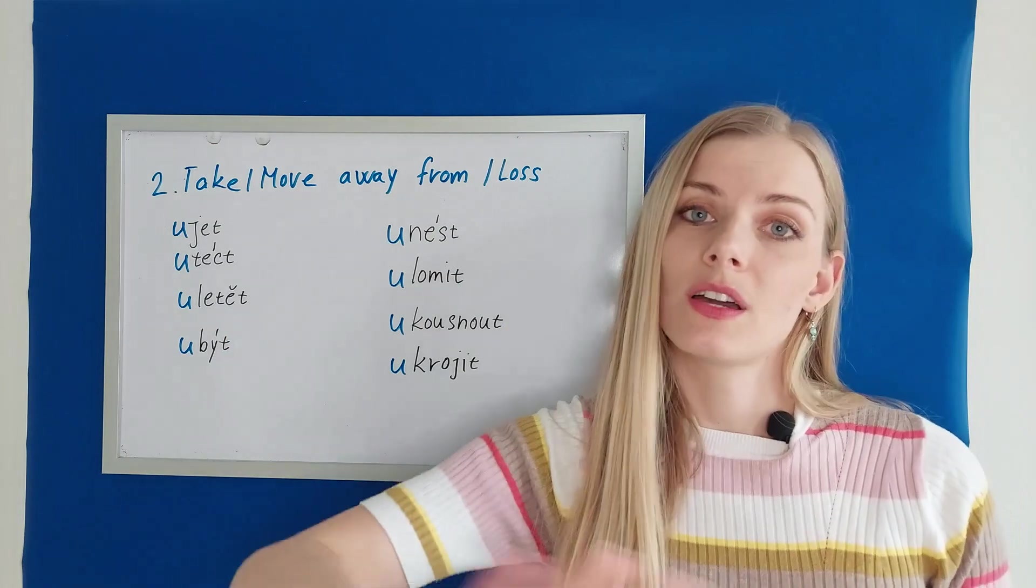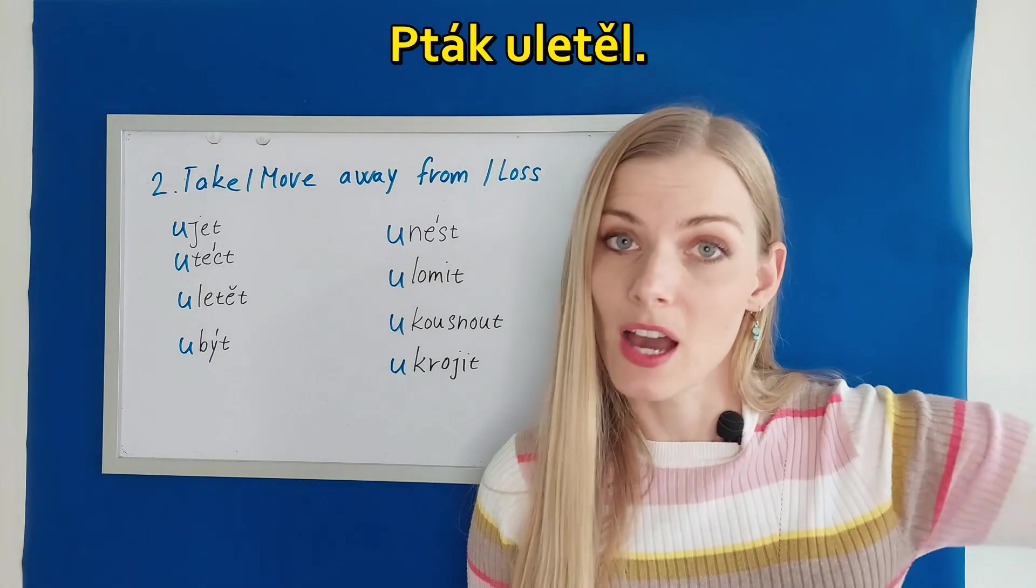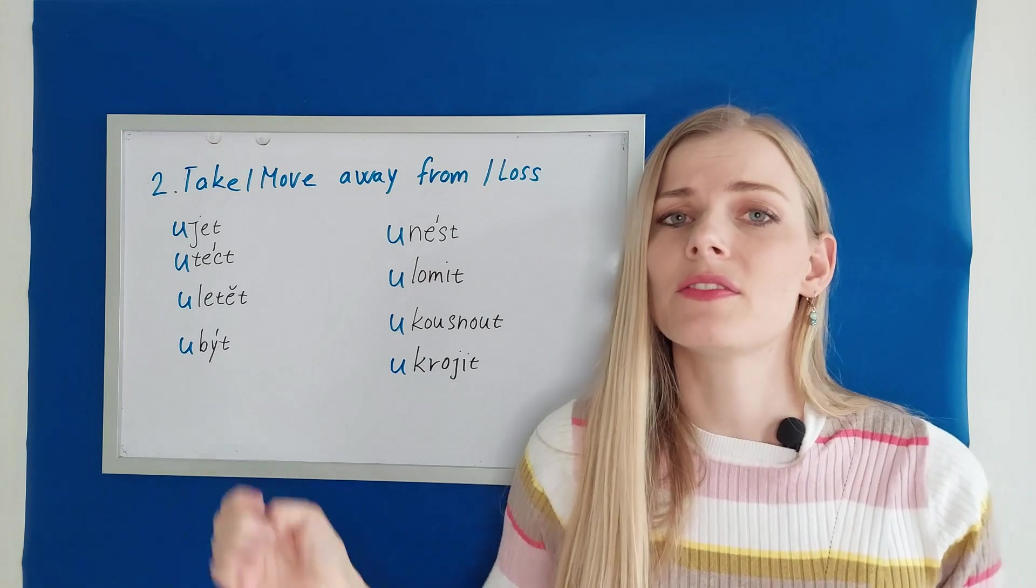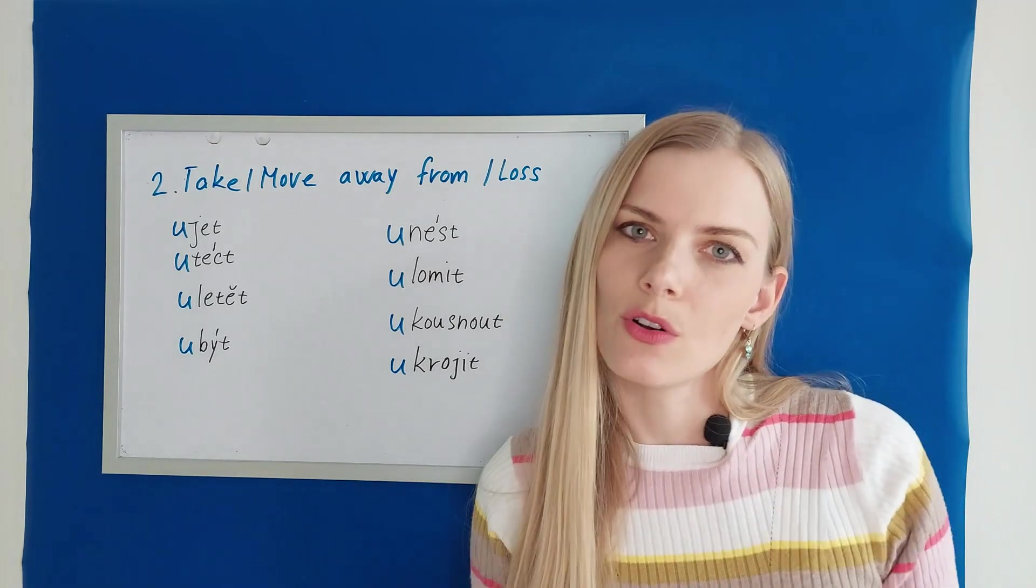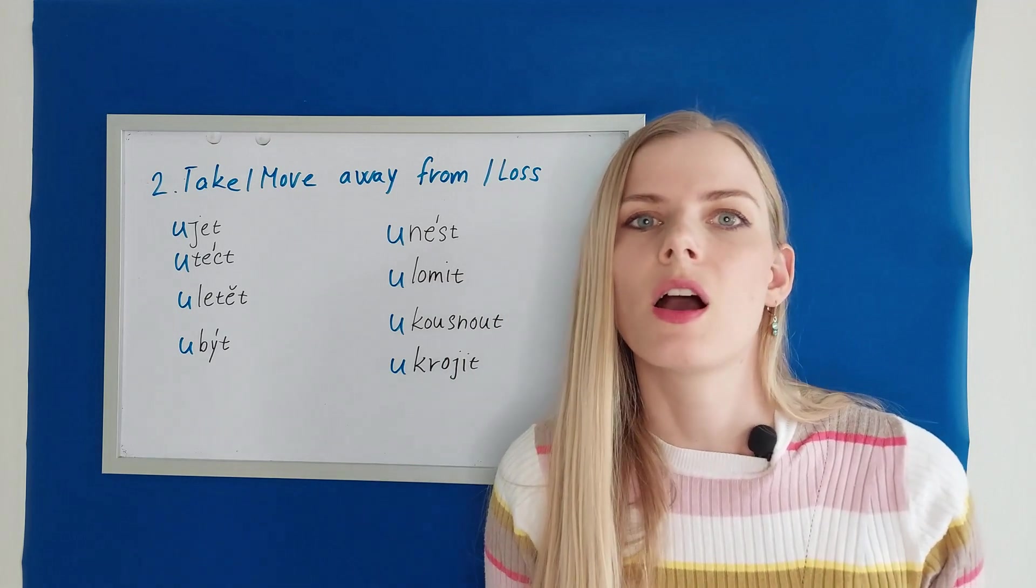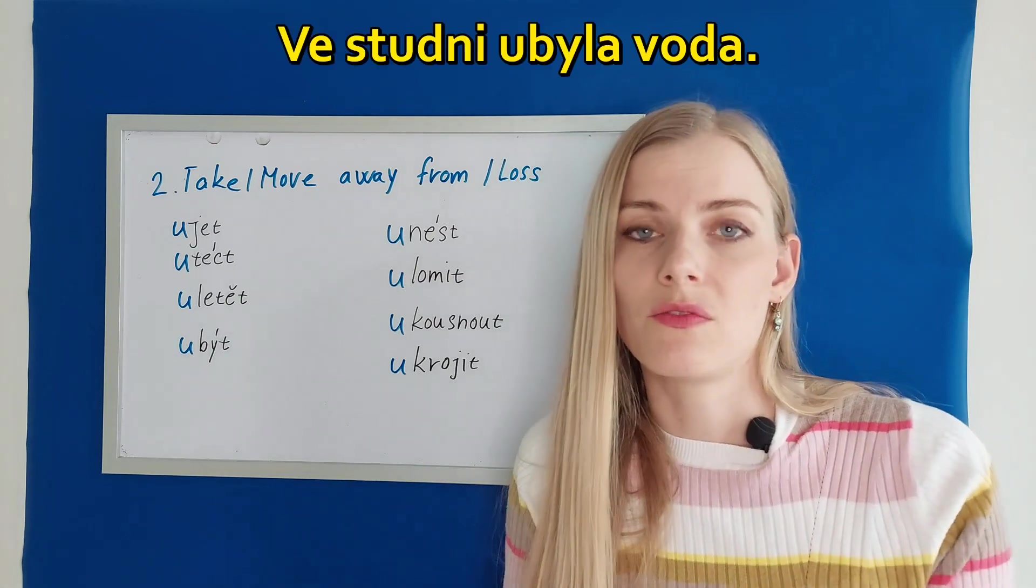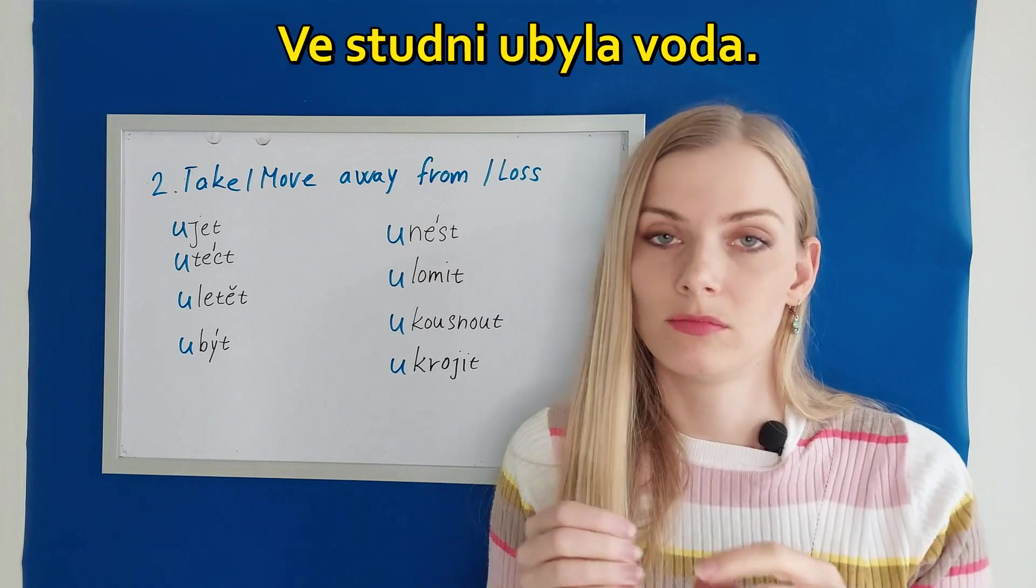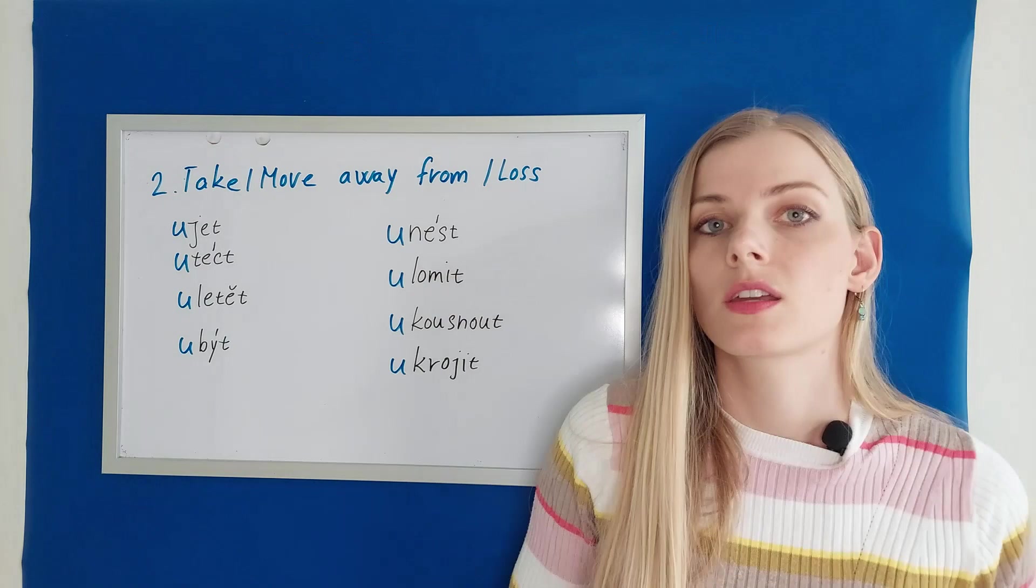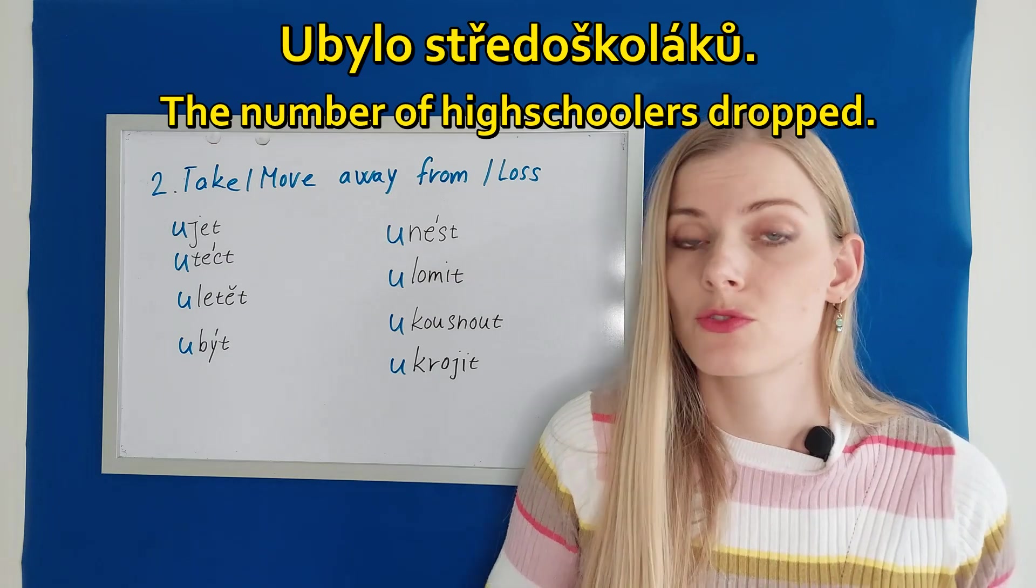Uletět is the same thing. To fly away. Uletělo mi letadlo. The plane got away. Pták uletěl. The bird flew away. Now, ubýt. Ubýt is a little different. It means to decrease in volume. Usually we use it in the third person and we say how much something was lost. For example, ve studni ubyla voda. The water in the well decreased. There is less water in the well. It can also mean decrease in number. Ubylo středoškoláků. A number of high schoolers dropped.